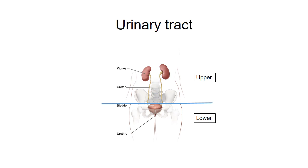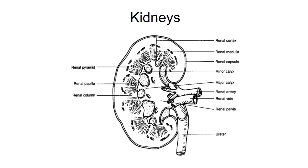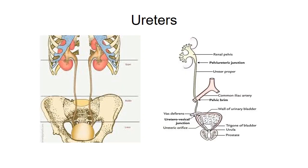The urinary tract is divided into two parts: an upper tract with the kidneys and ureters, and a lower tract with the urinary bladder and urethra. This picture shows the basic anatomy of the kidney. There is an outer cortex and an inner medulla with five to ten papillae in each kidney. These papillae drain urine into the major and minor calyces, and there is a central collecting area called the pelvis.